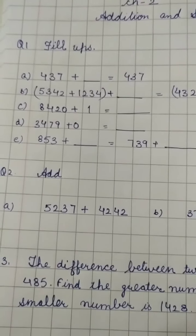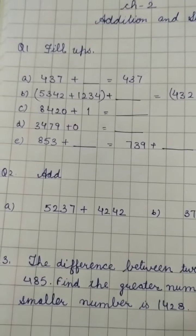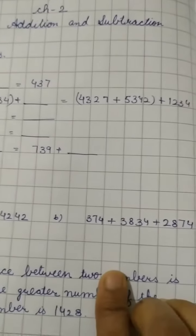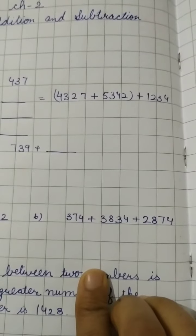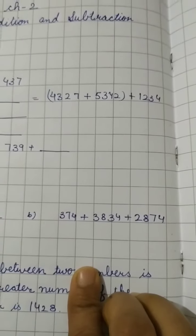A part is 5237 plus 4242. B part is 374 plus 3834 plus 2874.